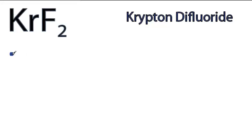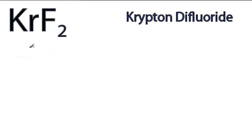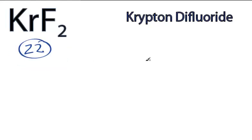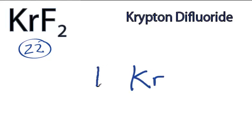This is the Lewis structure for KrF2, krypton difluoride. For KrF2, we have a total of 22 valence electrons. Kr is the least electronegative, so it'll go at the center, and we'll put the fluorines on either side.